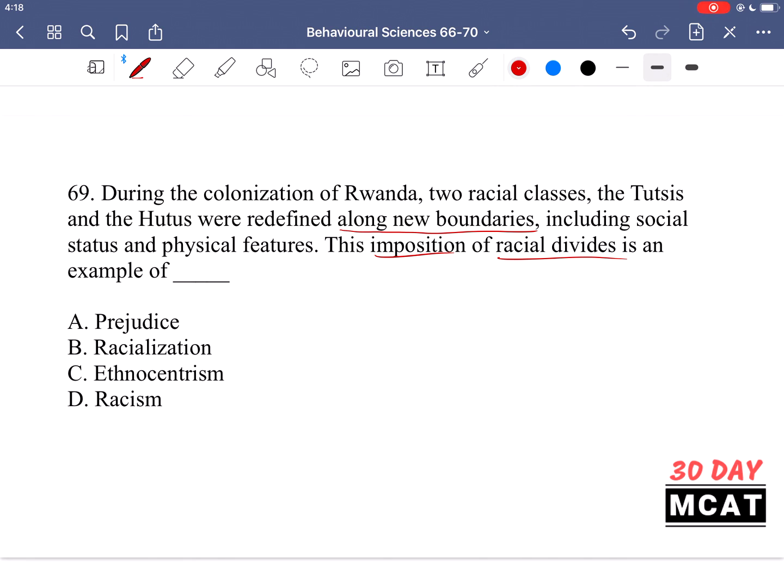So the term which best describes this would be option B, racialization, which is creating new race groups which didn't exist before based on whatever factors. In this case, they're looking at social status and physical features. Prejudice—these are held beliefs by an individual based on what they have heard about or learned, but not something which they've first-hand experienced, not based on first-hand experience. So these preconceived notions are prejudices.